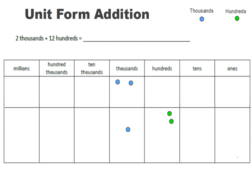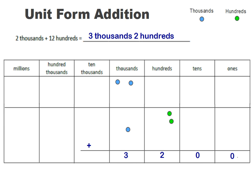Now I have to add them together. How many blue chips — how many thousand chips — do I have? Let's count them: one, two, three. How many green chips do I have? These are my hundred chips: one, two hundreds. I don't have any chips in the tens place or the ones place. So when I write this answer in unit form it's going to be three thousands, two hundreds. If I were to write this in standard form it would be three thousand two hundred.